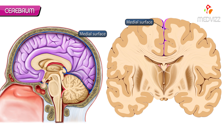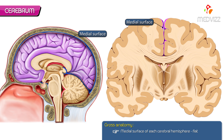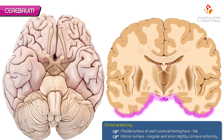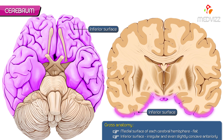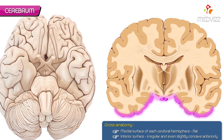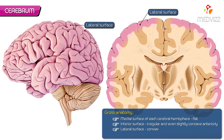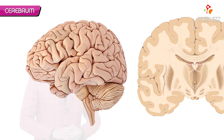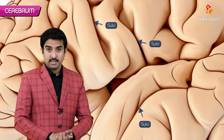Looking at the medial surface of each cerebral hemisphere, the medial surface is flattened and the inferior surface is extremely irregular and slightly concave — this concavity is more predominant anteriorly compared to the posterior aspect of the cerebrum. The lateral surface, however, is convex. All surfaces are lined by the cerebral cortex.